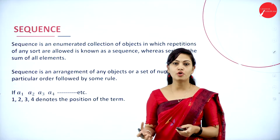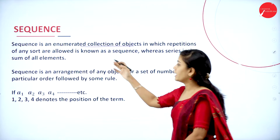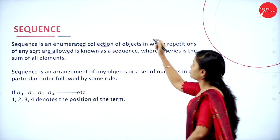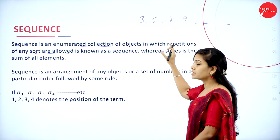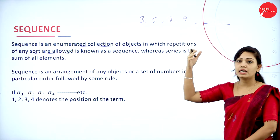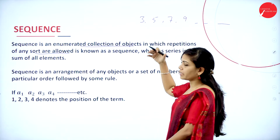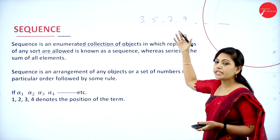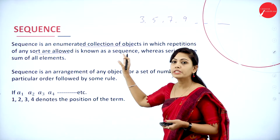Sequence is a collection of objects, an arrangement of elements. Sequence is an enumerated collection of objects in which repetition of any sort is allowed. For example: 3, 5, 7, 9, etc. It allows sorting the elements — sorting means ascending or descending order. This sequence allows repetitions of any sorting of elements.